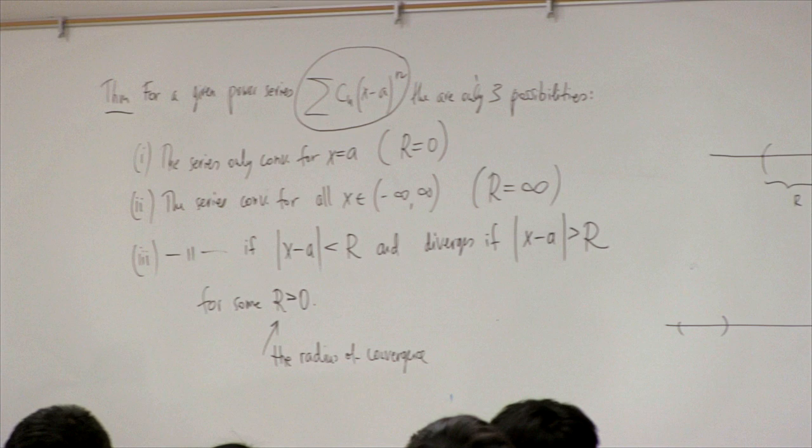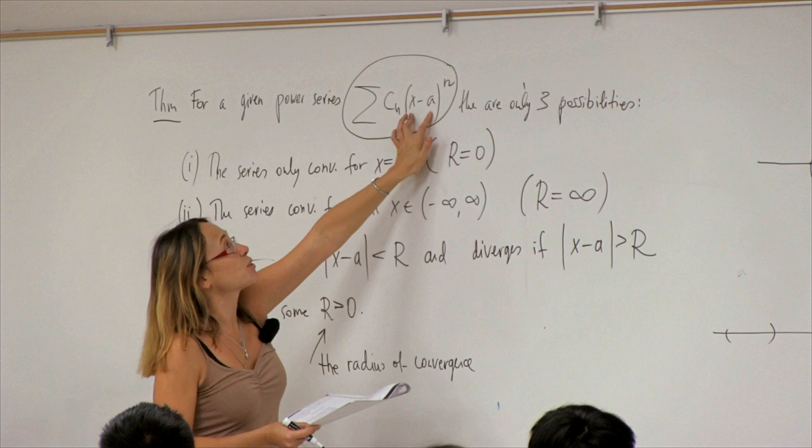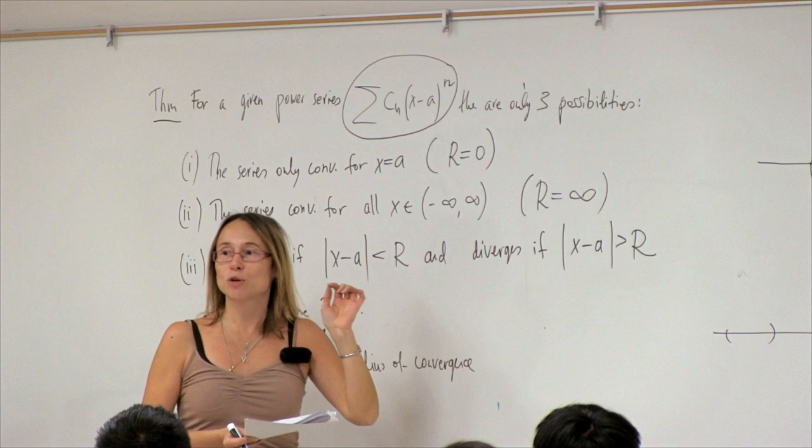Will there ever be a power series that diverges for all values of x? The power series Σ cₙ(x−a)^n must converge when x equals a exactly, because in that case all terms are zero. So no matter what, it converges at x equals a — this is the minimal case.